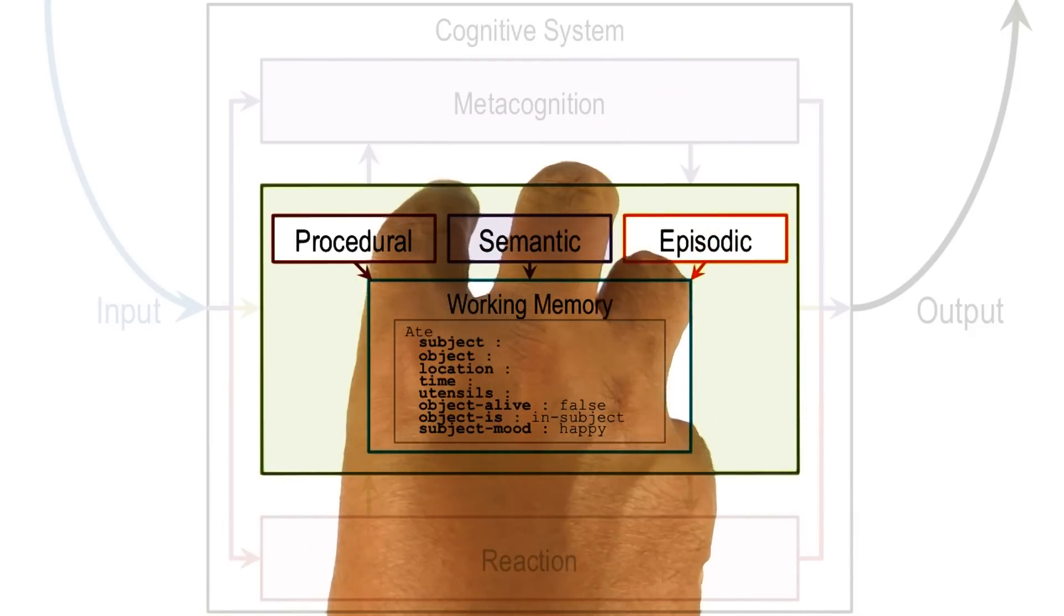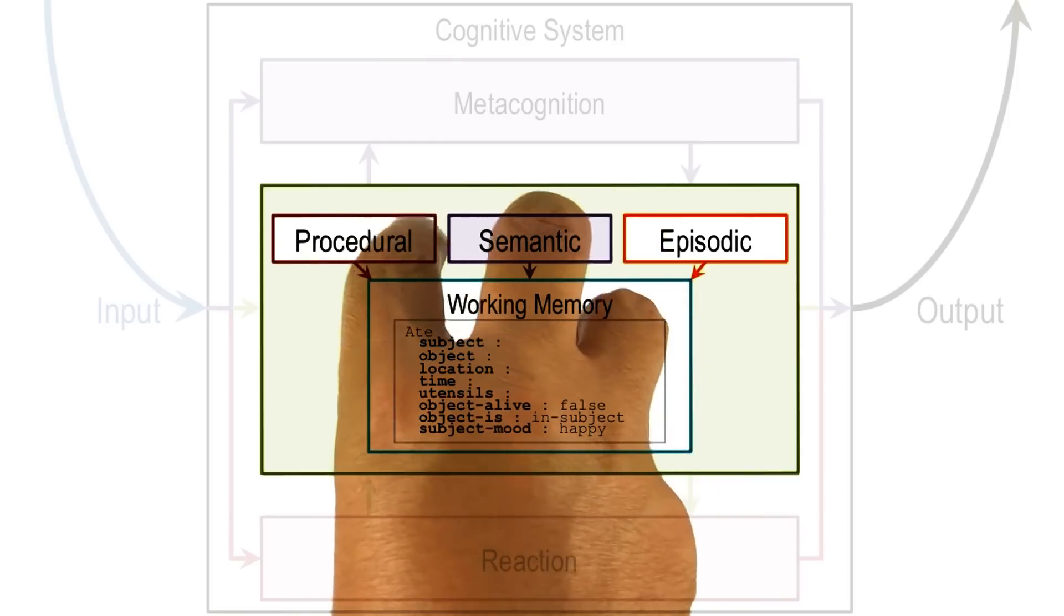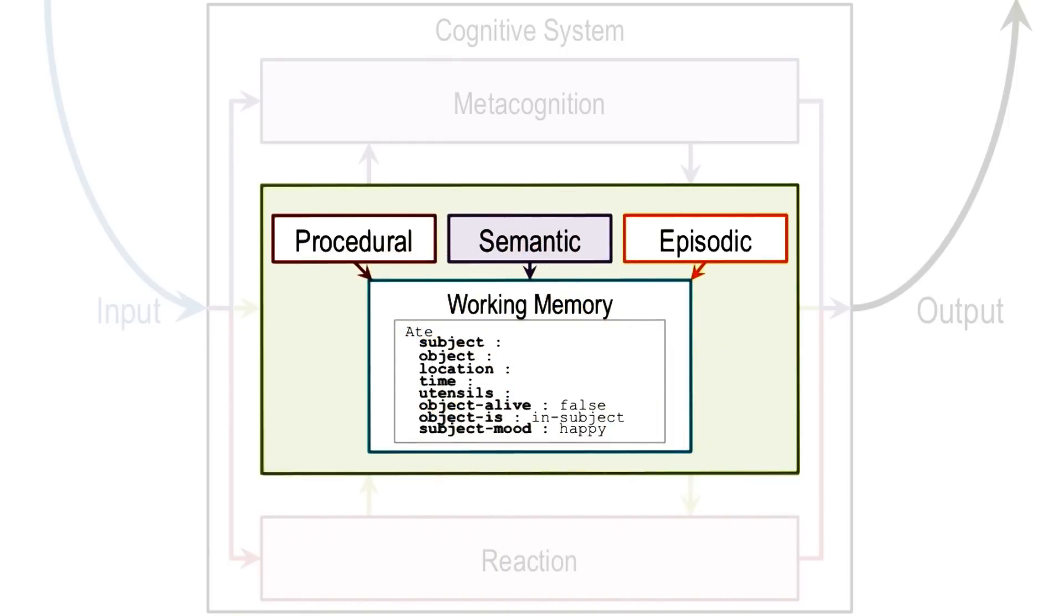Also, mind provides knowledge structures, like frames, rich, structured knowledge representations, which generate expectations and make the processing partially top down.